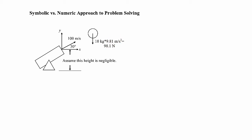To find the trajectory, we draw a free body diagram — just weight acting down, neglecting any drag from the surrounding air. Applying Newton's second law, the sum of forces in the x direction equals mass times acceleration. In the x direction, the sum of forces is zero Newtons — there are no forces acting in the x direction — so 0 = 10 kg × ẍ.